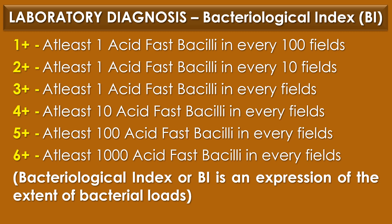The results are expressed as 1 plus, 2 plus, 3 plus, 4 plus, 5 plus and 6 plus. The 1 plus shows at least 1 acid-fast bacillus in every 100 fields. The 4 plus shows at least 10 acid-fast bacilli in every field. The 6 plus shows at least 100 acid-fast bacilli in every field.